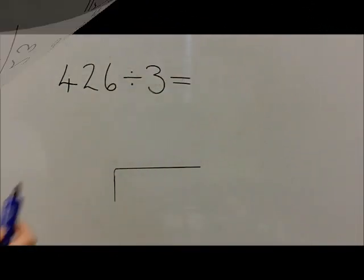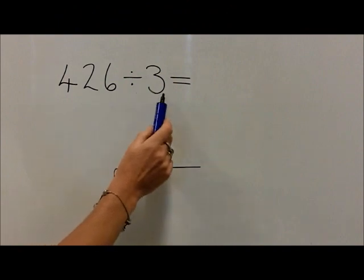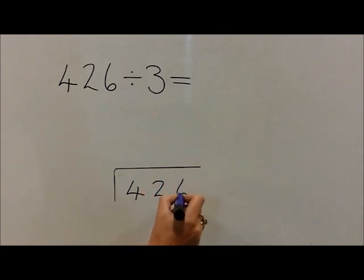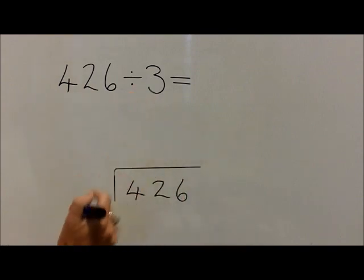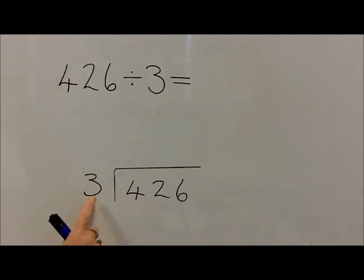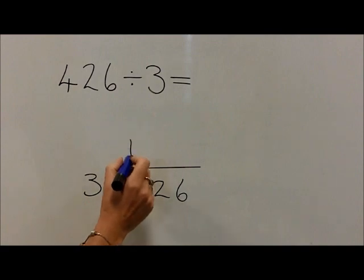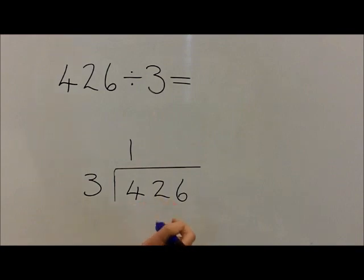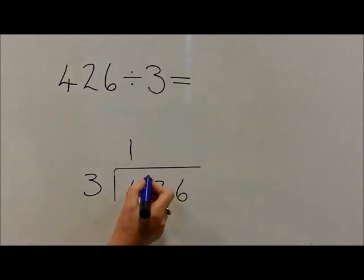With the question 426 divided by 3, we write the 426 underneath the bus stop or bridge, and then the divide by 3 to the left of the bus stop. Now it's the question how many 3's are in 4. Children should know that 1 times 3 is 3. Because we've got 4, we do 4 take away the 3 we've just found, which leaves us 1 left over to carry.